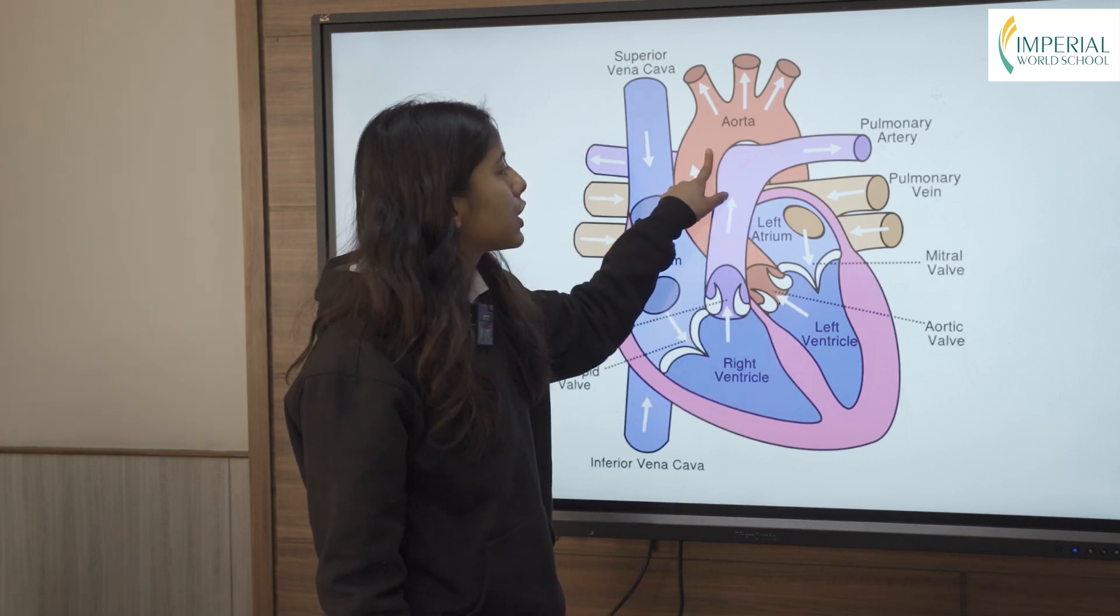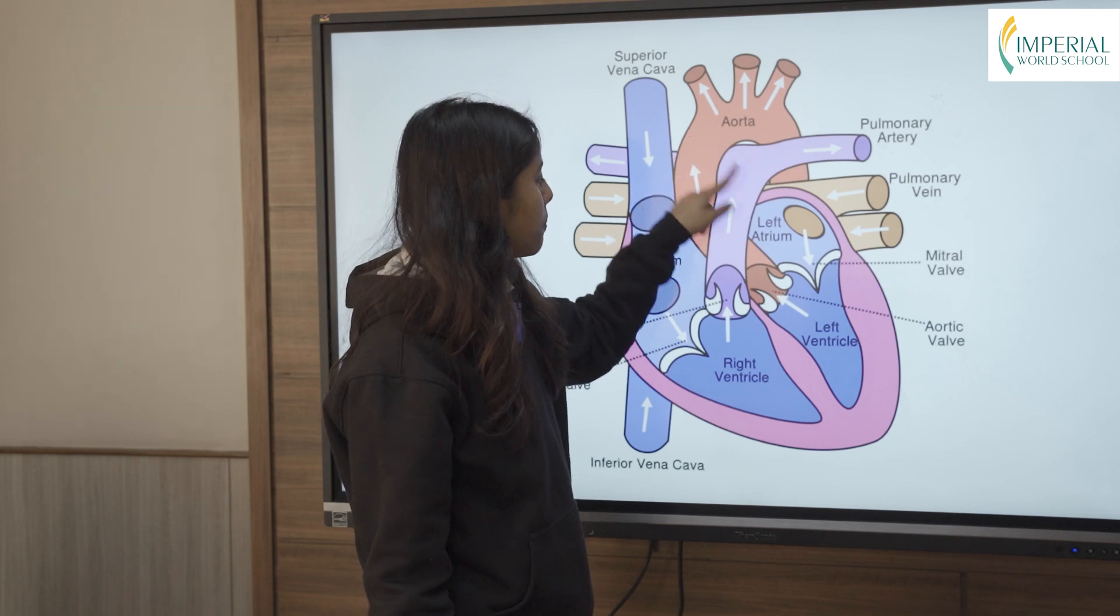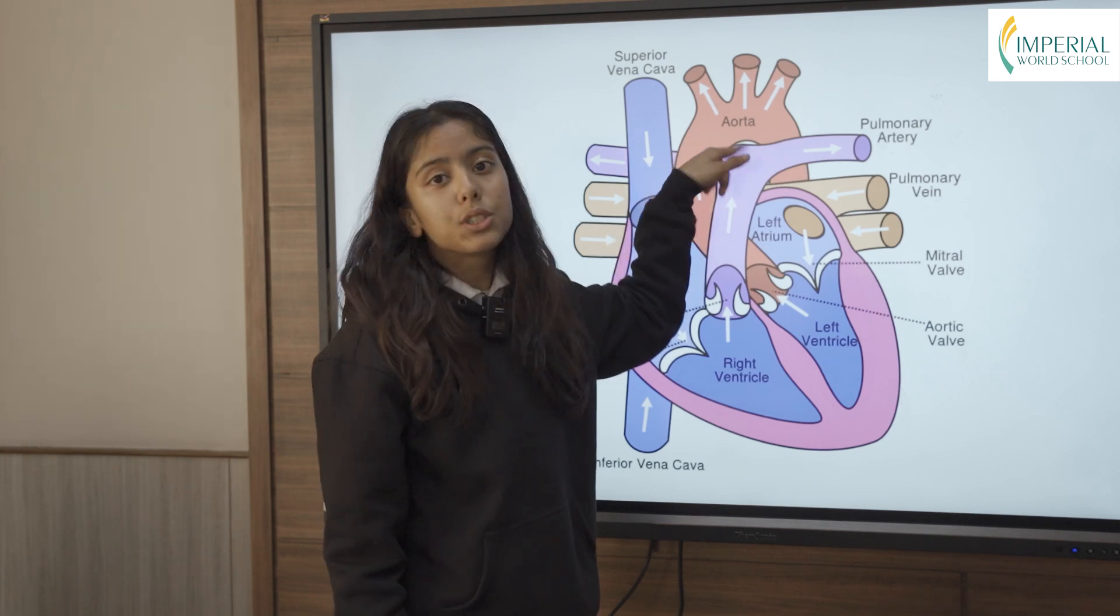The aorta is a very large artery and now the oxygenated blood from here passes to different parts of the body.